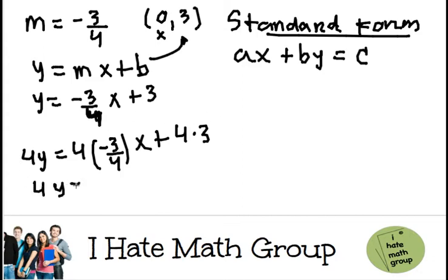This is going to be 4y equals. When you multiply, remember this is a fraction, so it's the same as doing 4 times negative 3 over 4, or just canceling out the 4s, which is just negative 3x, and 4 times 3 is just 12.